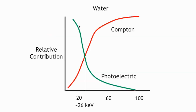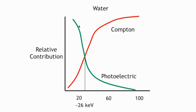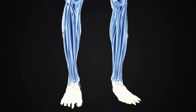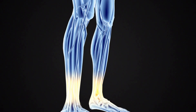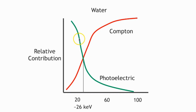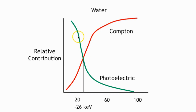This is one reason why you want to use lower energy photons, as long as they can make it through the anatomy of interest. For instance, if you double your energy, you're going to see a significant change — you could go from having 60% of your interactions be photoelectric to having 60% of your interactions be Compton.